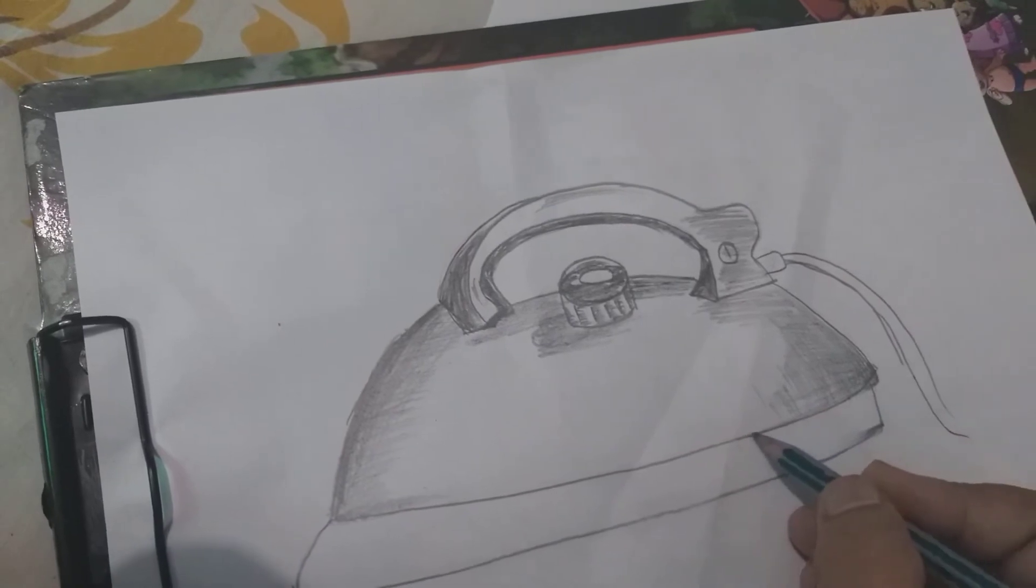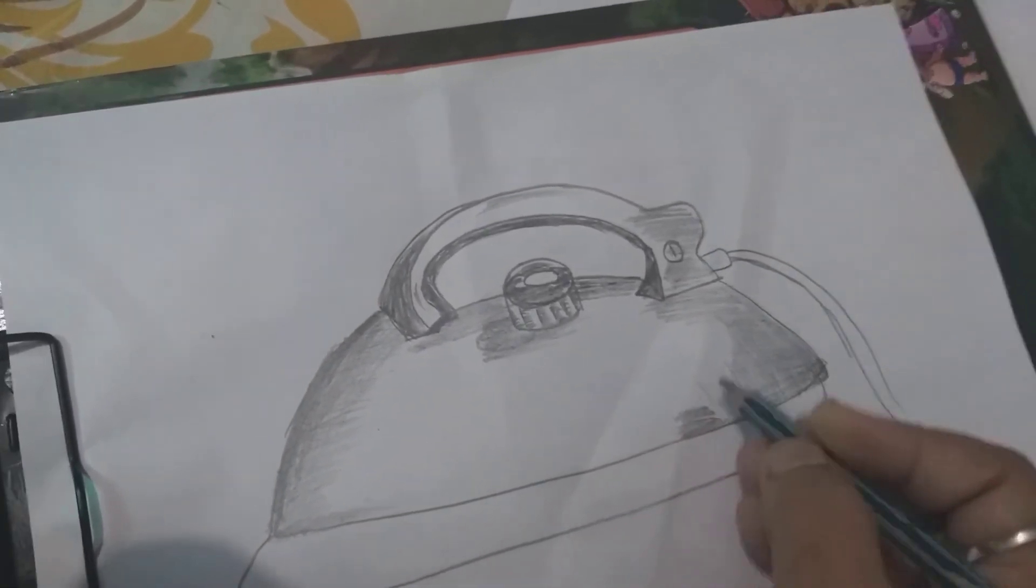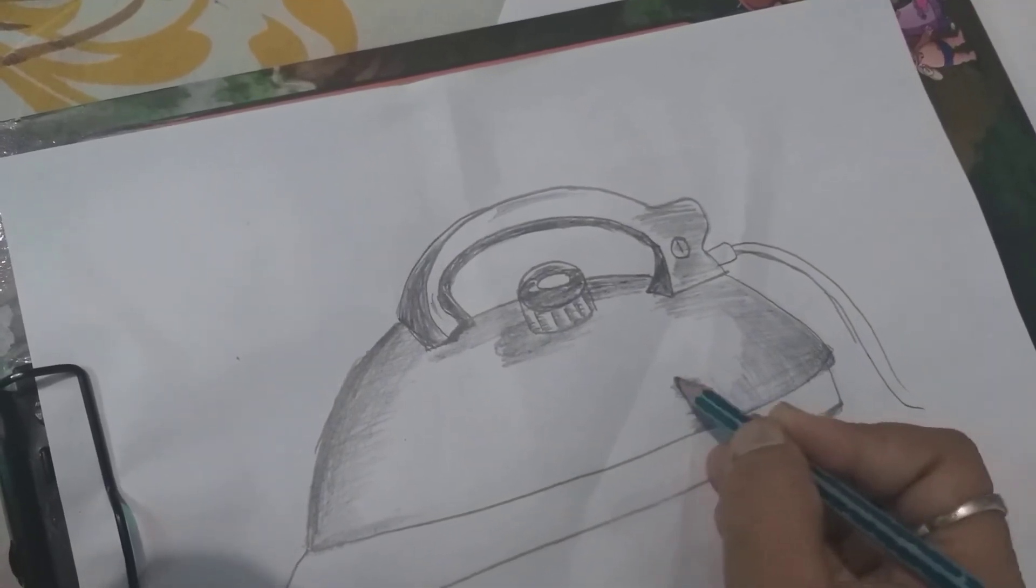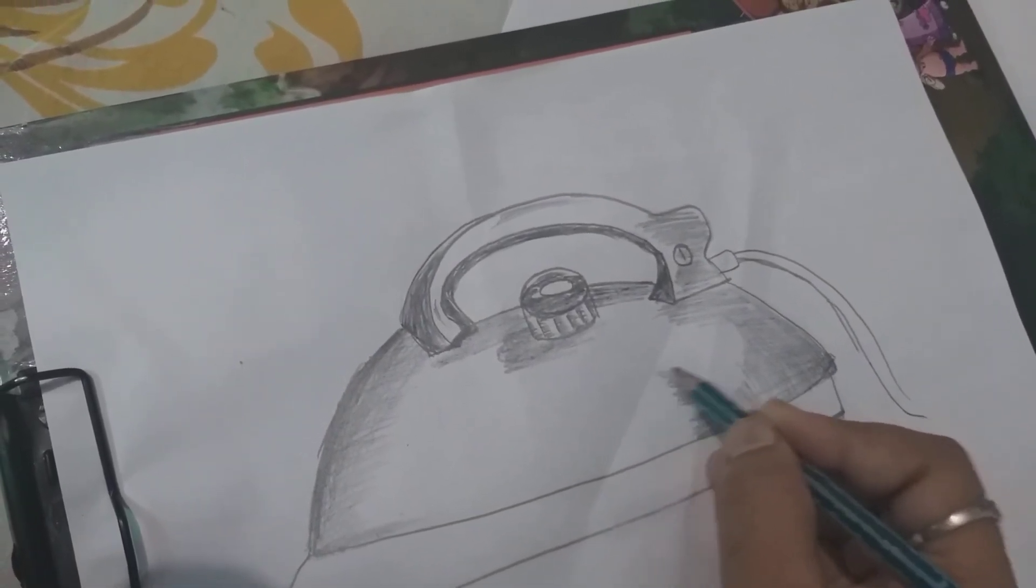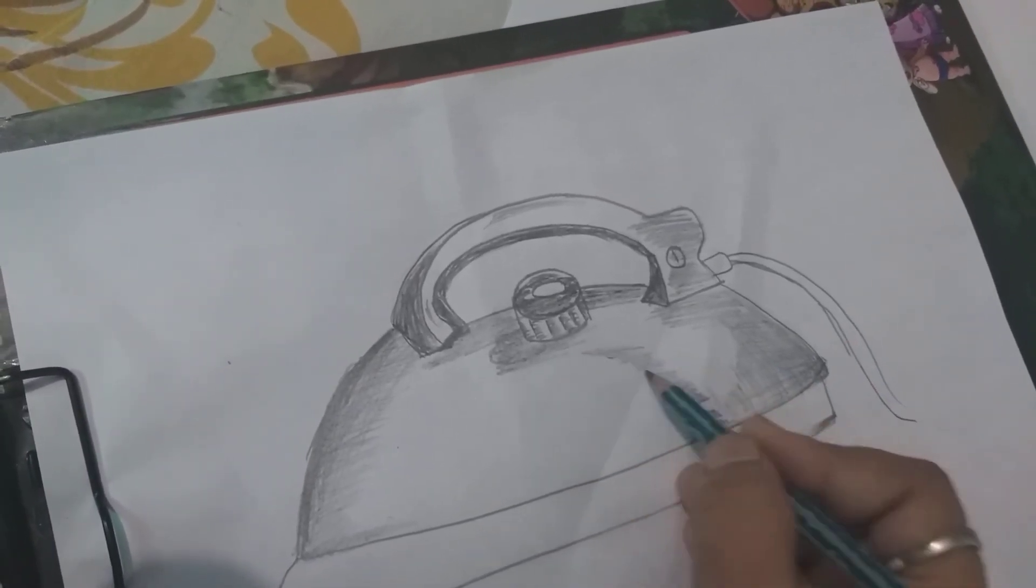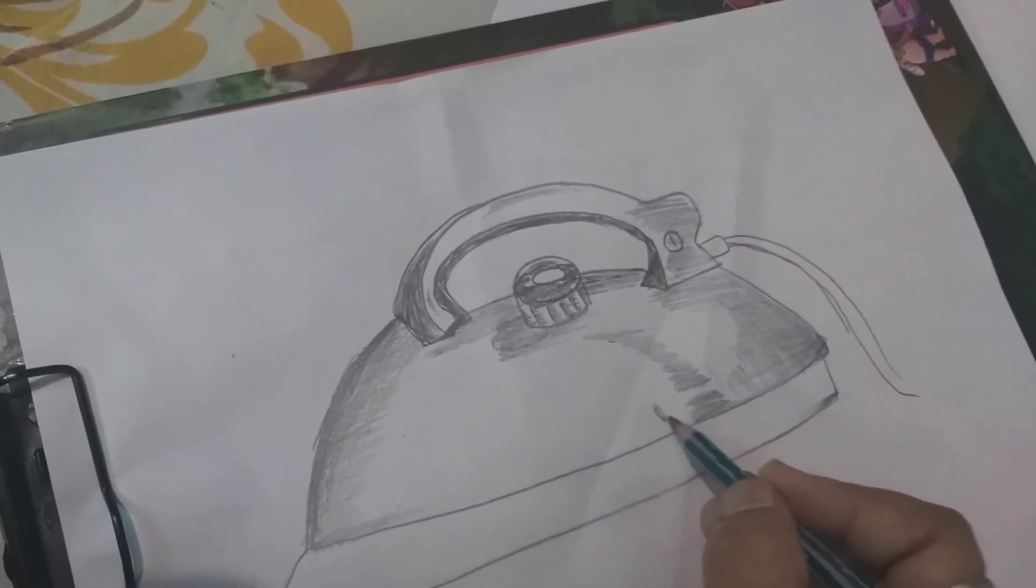And after that I am going to highlight the area. Iron is made by metal, so shading is different. Shading will be different for metal than any other object.